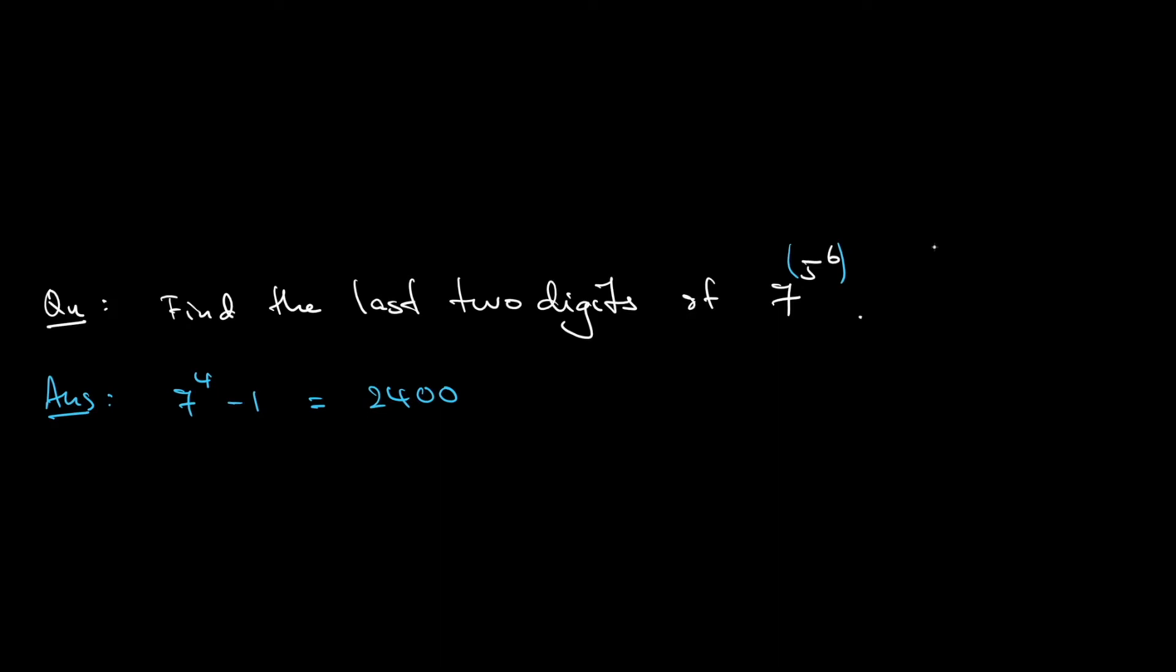so notice that this is always divisible by 100. Okay, so that means that if you write in modulo, 7 to the power of 4 is congruent to 1 modulo 100. Okay,